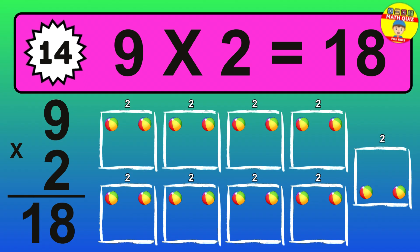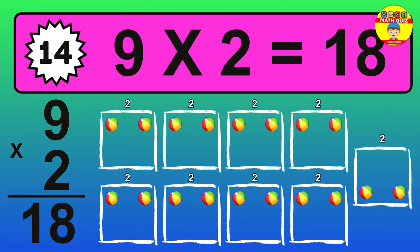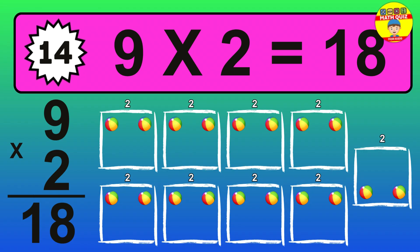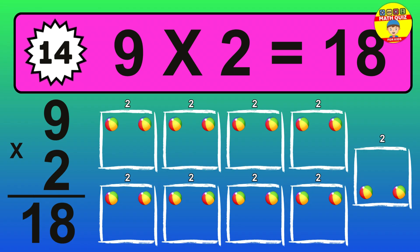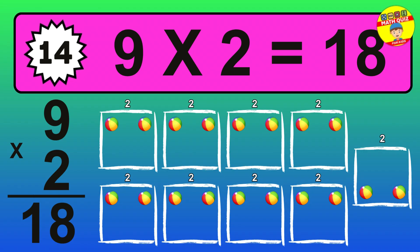To calculate, we have 9 groups with 2 balls each one. So, how many balls do we have? 18 balls.